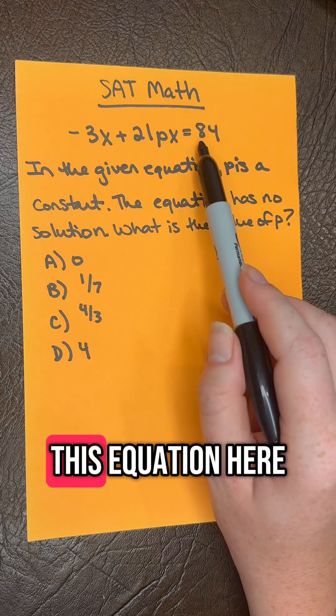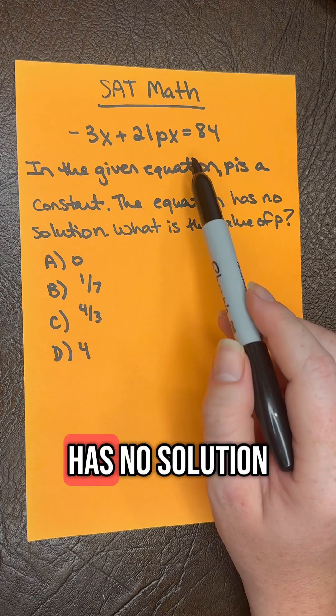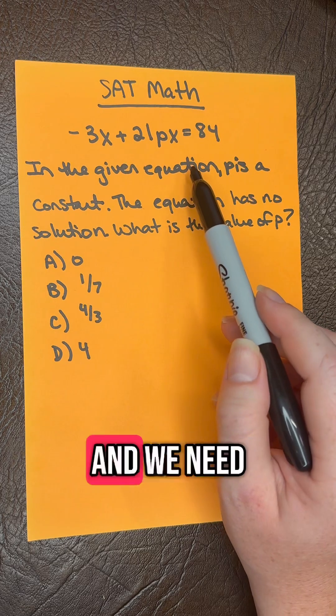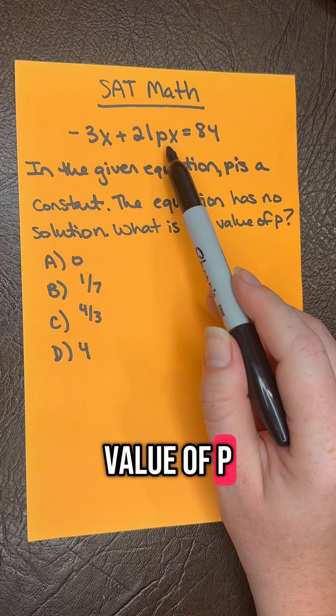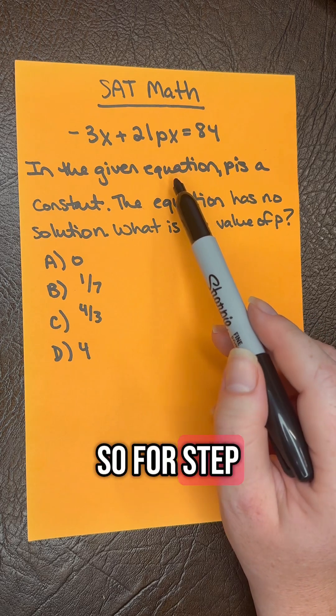So we're given this equation here, and we're told that this equation has no solution, and we need to find the value of P that makes that true. So for step one,